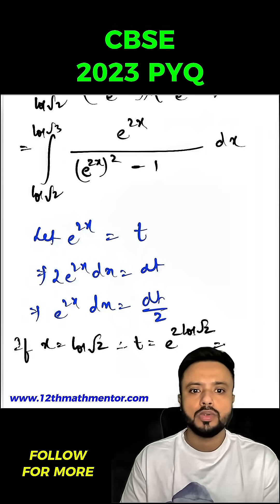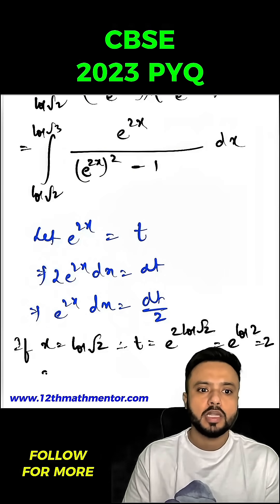So I can write it as e raised to the power log 2, it will go up 2 and square it. So e raised to the power log x is x only, so we are getting x of t value 2.